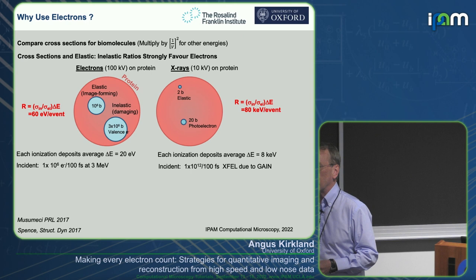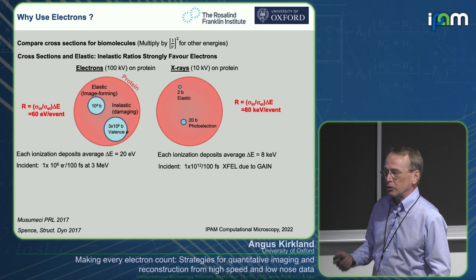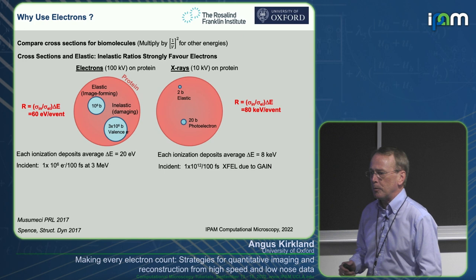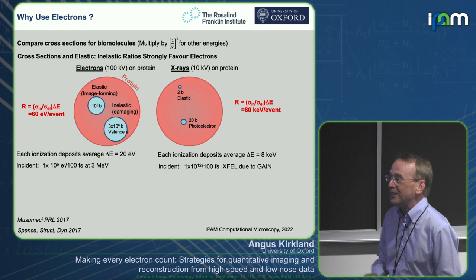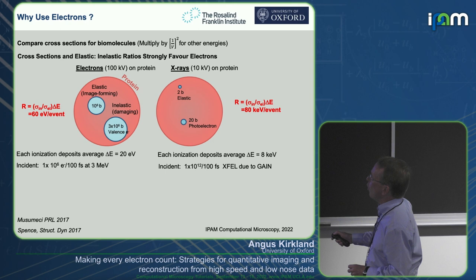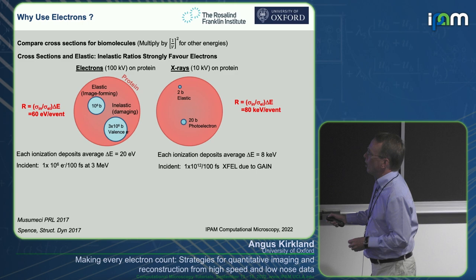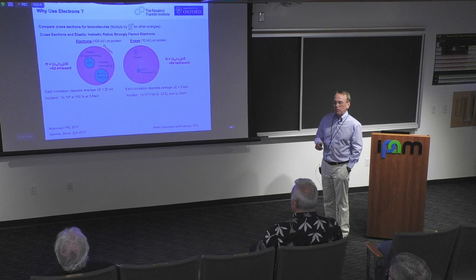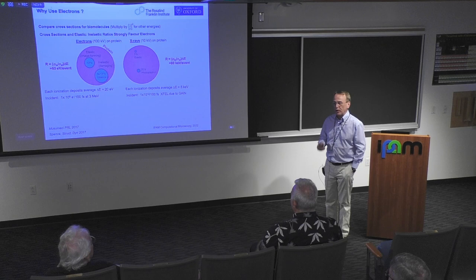I'm an electron microscopist — I've been in that game for over 20 years — and the first question we ask is what's the advantage of using electrons? This is a slide that the late John Spence gave me. It contains all the information that justifies my existence as an electron microscopist. I'm going to compare cross-sections for various interactions of electrons in barns. A barn is a unit of area: 10 to the minus 28 meters squared, used by the particle physics community to represent cross-sections for scattering.